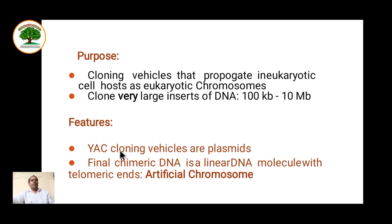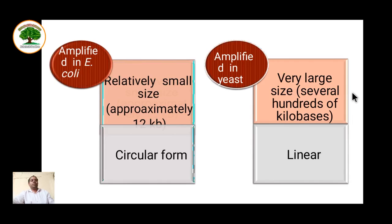YAC cloning vehicles are generally plasmids. The final chimeric DNA is a linear DNA molecule with telomere ends, like an artificial chromosome, so it is easily replicated and maintained in yeast. In E. coli it is amplified as a circular form with a relatively small size of approximately 12 kB, whereas in yeast it is linear and of very large size, around several hundreds of kilobase pairs.